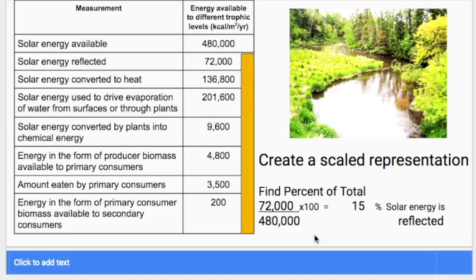If you wanted to calculate how much of that energy is just being reflected, how much of that light is just reflecting back into space, what you would need to do is a calculation like this, where you would find the percent of that total energy available. You would take one of those numbers for energy reflected, you divide it by the total, multiply it by 100, and you would get 15%. So 15% of the solar energy that is coming in is just being reflected back into space.